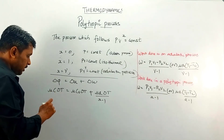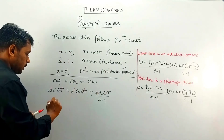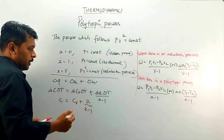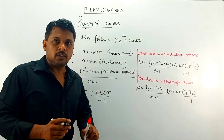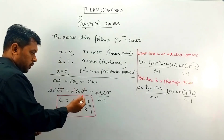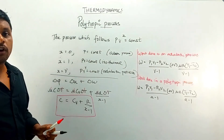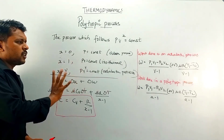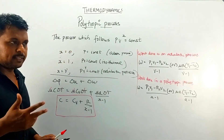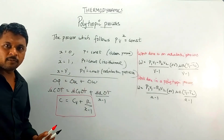Removing the common terms mu * delta T, the molar specific heat capacity c equals c_v + R / (x - 1), where R is the universal gas constant. This is the expression for specific heat capacity in a polytropic process. Depending on the value of x, we can find the specific heat capacity. This topic on polytropic processes is included in the NEET and JEE competitive examination syllabus.